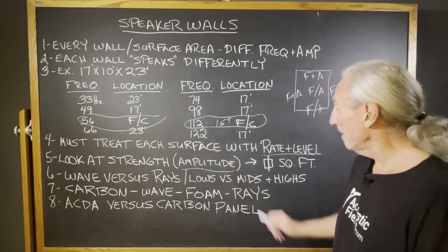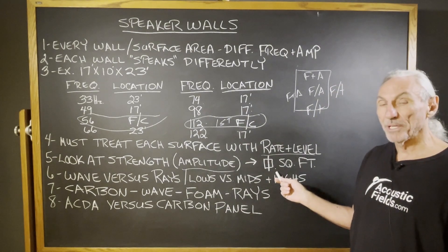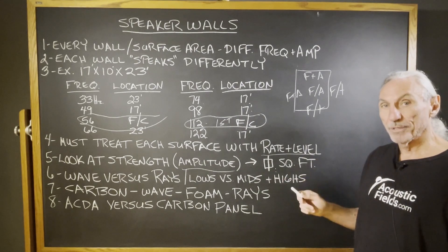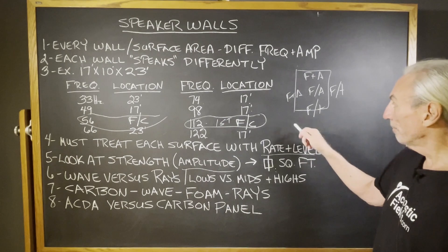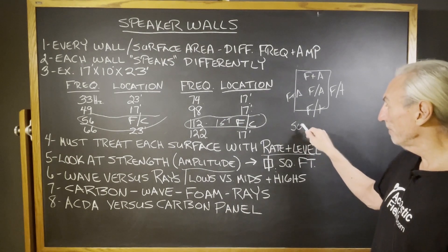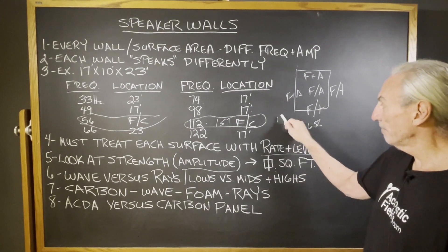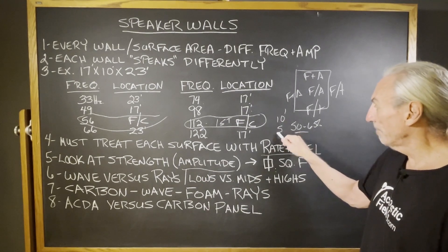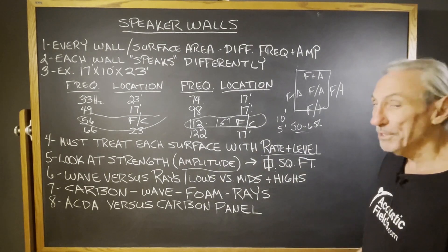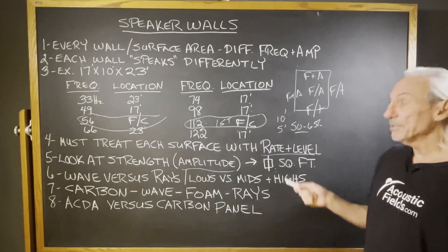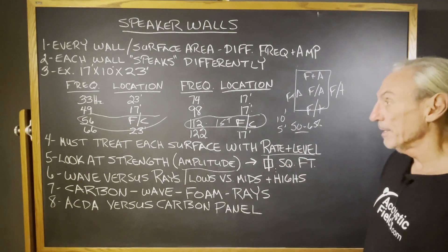We want to look at the strength and the amplitude, and then it's all about square footage, especially in low frequencies. We cover as much square footage as we can to manage the energy. For low frequency management, we like to have 50 to 65 percent coverage. So if we have a 10-foot ceiling, we want to get five feet of coverage across that wall. Good rule of thumb — doesn't pertain to every situation, but it gives you some guidelines and a roadmap.